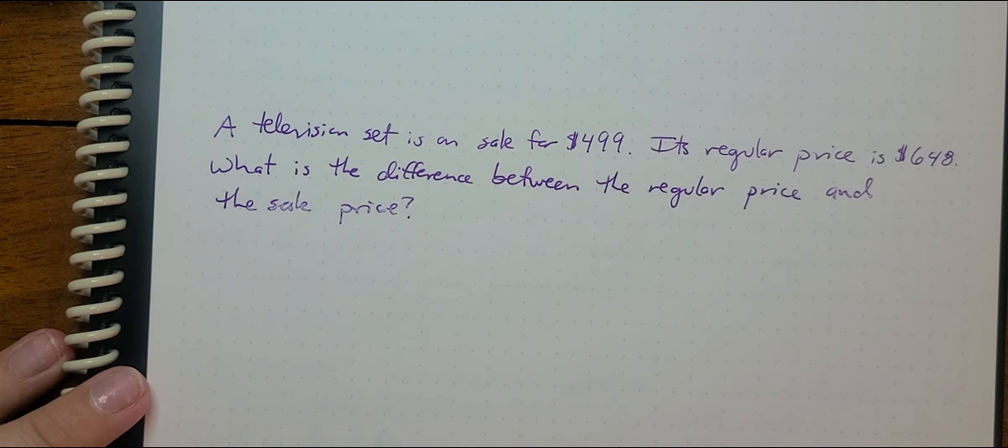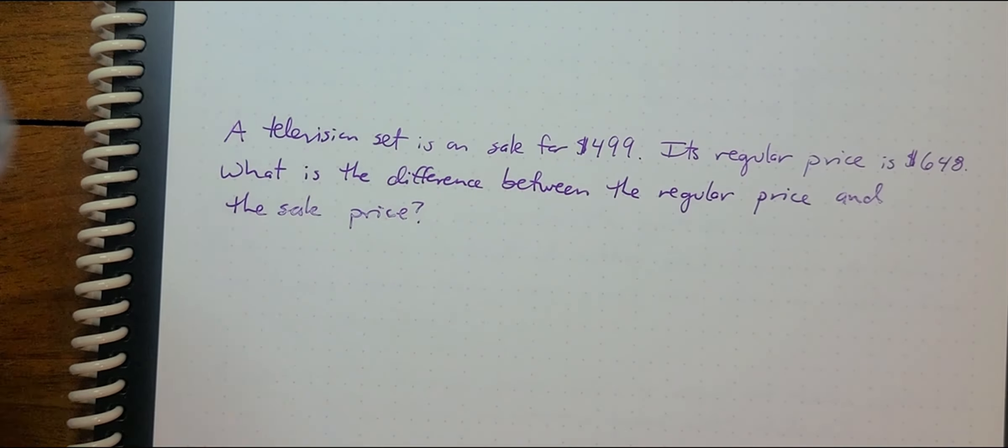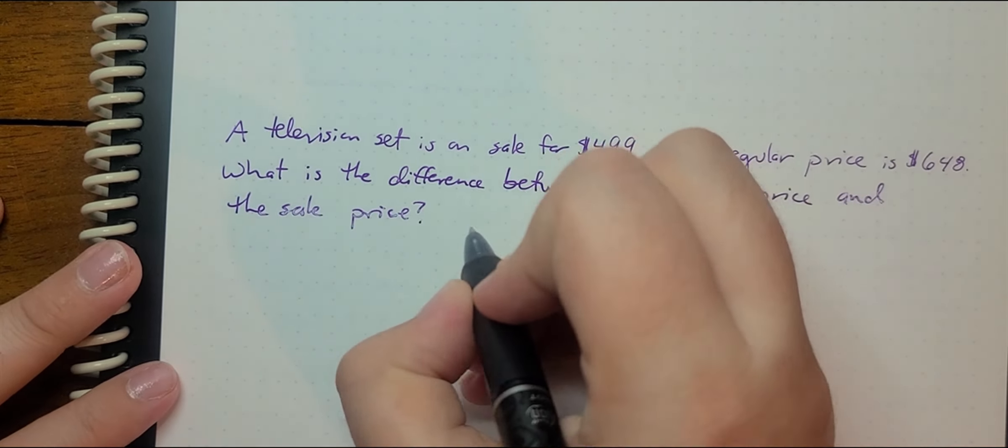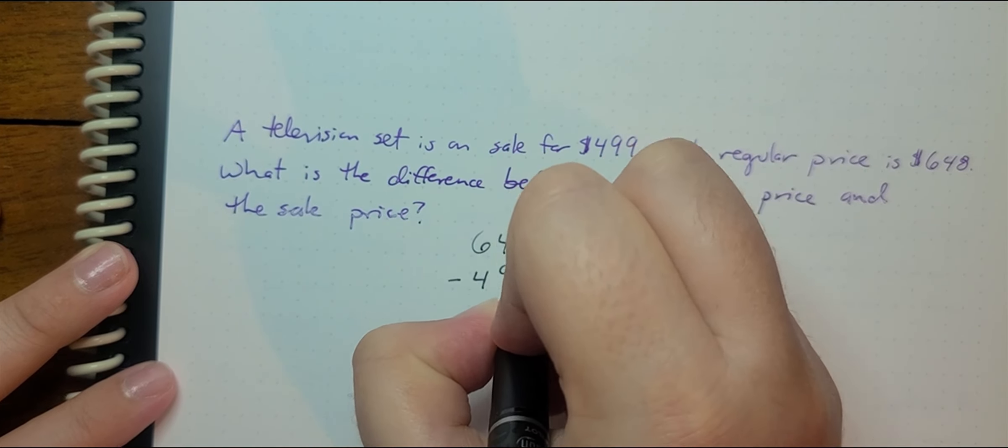Likewise, and maybe a little bit more interesting, a television set is on sale for $499. Its regular price is $648. What's the difference between the regular price and the sale price? We're just trying to ask ourselves, how much money are we really going to save here? So we're going to take 648 and subtract 499.